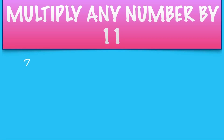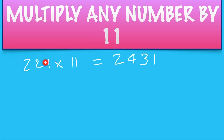Let's say I've got 221 times 11. The answer is 2, 4, 3, 2. And I'll explain that. All you do: 1 plus 2 is 3, 2 plus 2 is 4, and 2 and nothing is 2.